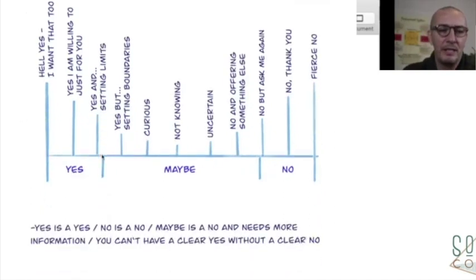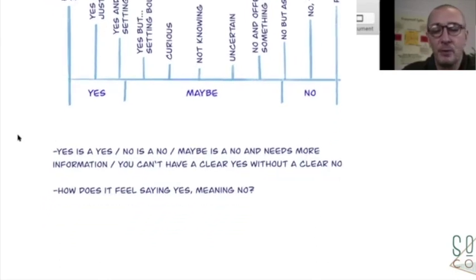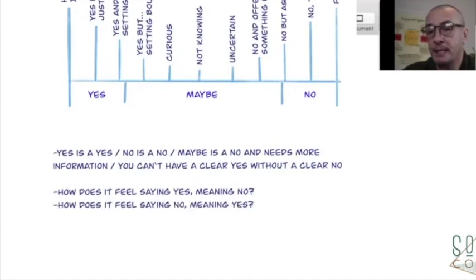All right, so yes is a yes, no is a no, maybe is a no and needs more information. But without having a clear yes, you can't have a clear yes without having a clear no. Question: how does it feel saying no and how does it feel saying no meaning yes?